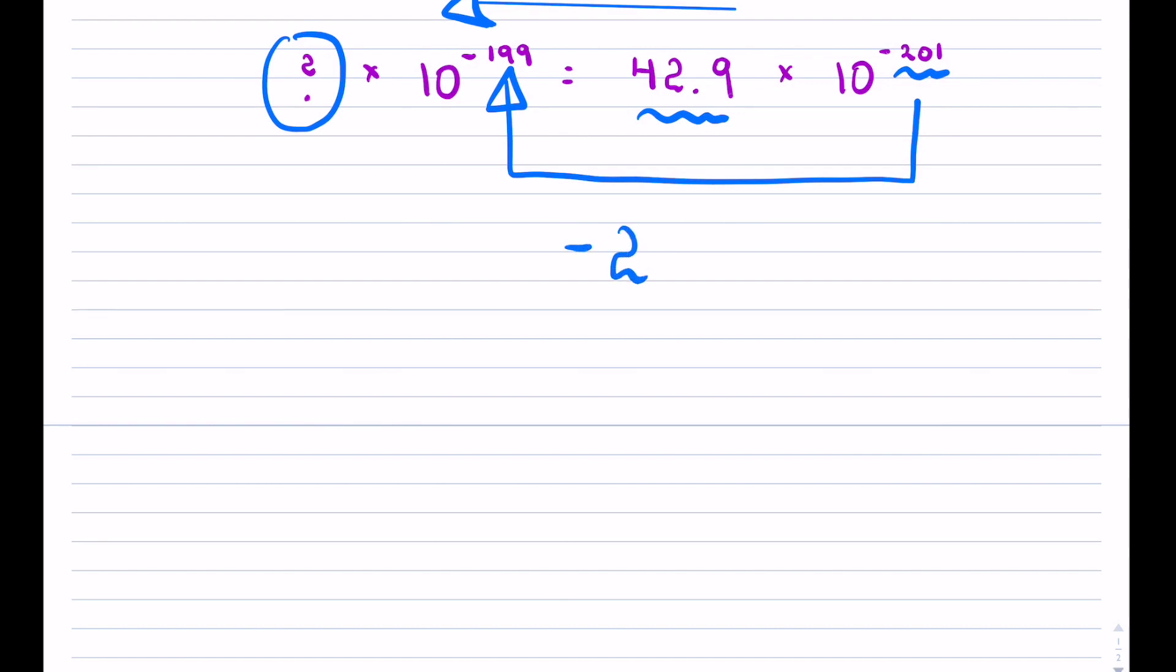So in order for me to go from negative 201 and get to negative 199, I actually had to make it bigger by 2. So this got bigger by 2. And as a result, as in the previous case, this will have to get smaller. So this concept of bigger, smaller, so smaller by 2.